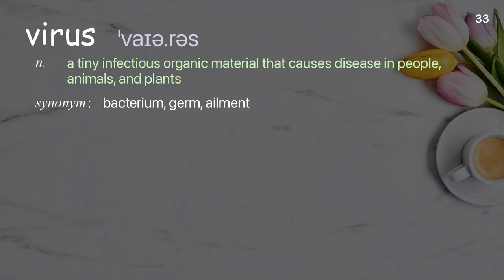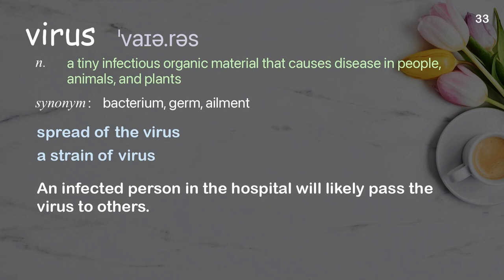Virus: a tiny infectious organic material that causes disease in people, animals, and plants. Examples: a strain of virus. An infected person in the hospital will likely pass the virus to others.